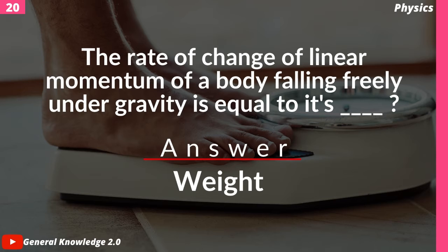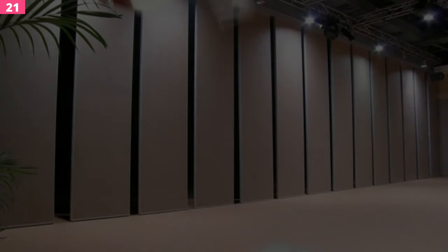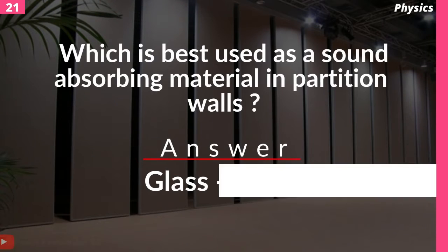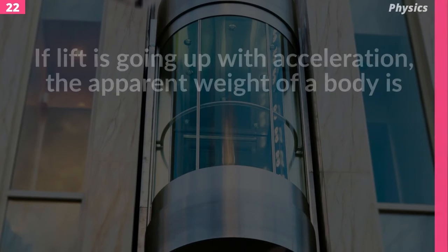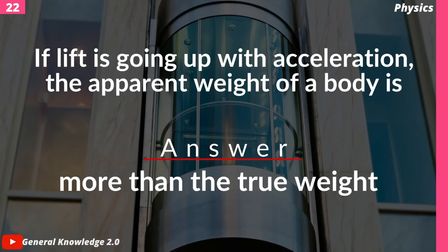The rate of change of linear momentum of a body falling freely under gravity is equal to — answer: weight. Which material is best used as a sound-absorbing material in partition walls? Answer: glass wool.